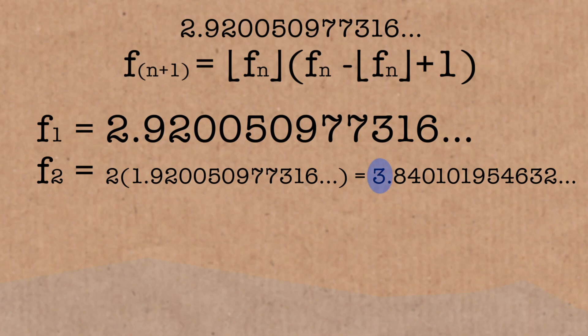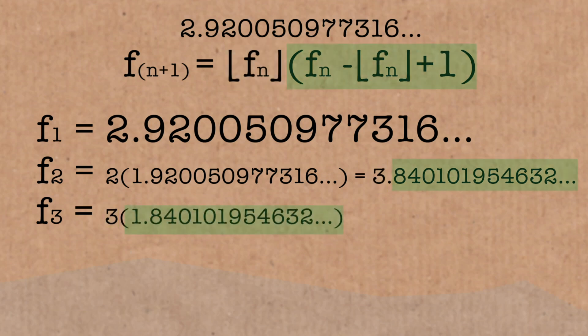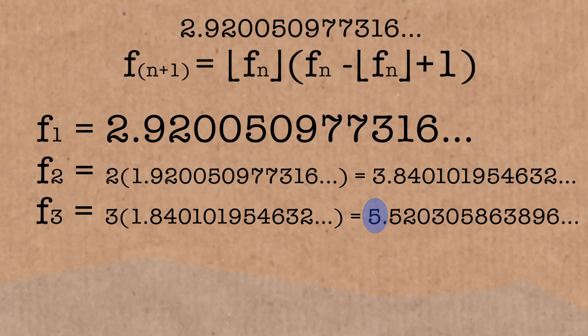Okay. So we're hoping this is going to work as well. Three, and then yeah, one plus the decimal part, 1.840, and stuff. What's it going to be? It's going to be five, that's good news, and some junk at the end of it.